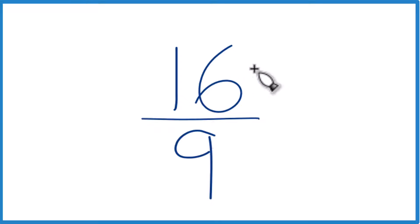...you'd find that it's already simplified because there's not a number other than one that goes evenly into both 16 and 9. We don't have a common factor. This is already simplified, but to write it as a mixed number...